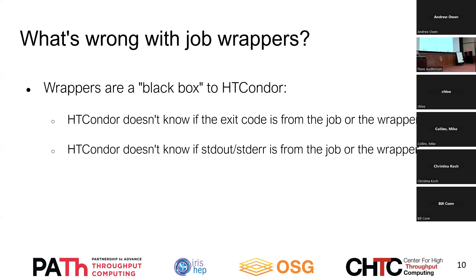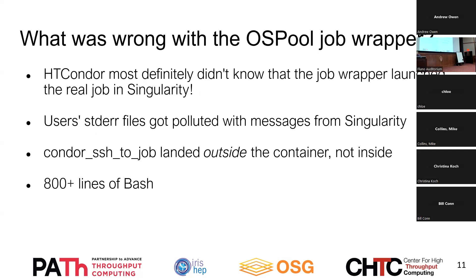The problem with job wrappers is that they're essentially a black box to Condor. Condor knows that it's the job wrapper, but doesn't know when the wrapper starts or ends and the user job begins. It doesn't know whether an error comes from the wrapper or the user job, and doesn't know if standard output comes from the wrapper or the user job — and of course if Condor doesn't know, Condor doesn't let the user know. A specific problem with the OS pool user job wrapper was that Condor didn't know the job was running in Singularity behind its back. So the user's standard error files got polluted with messages from Singularity, Condor SSH job didn't work since Condor landed the SSH session outside of the image instead of inside it. And on a technical debt side, it's 800 lines of Bash, which is way too much Bash.